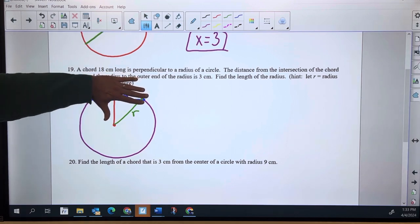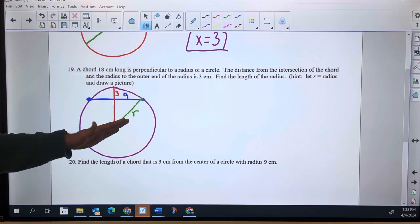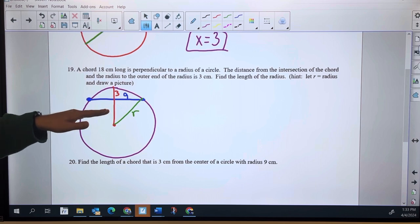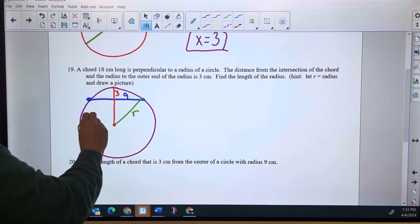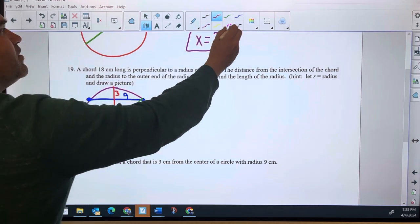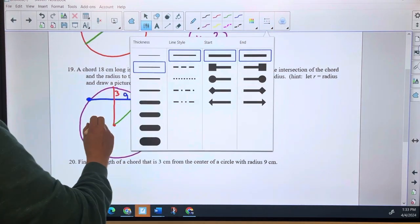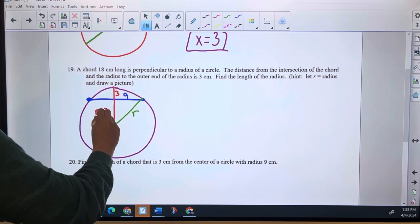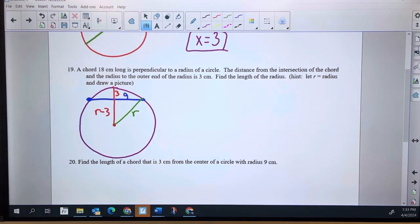If we zoom in on just this right triangle right here, I know the green line is R, the blue is nine, and the red is, the whole red is R, but this little piece of the red right here is R minus three.